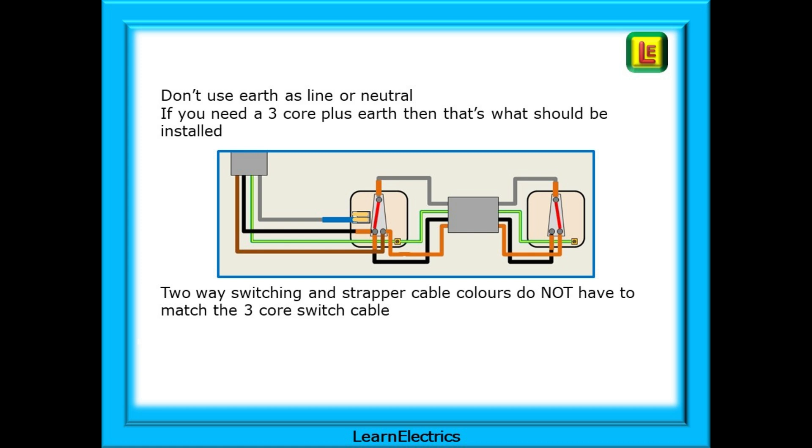Cost-wise, it will make a difference of just a few pounds to the customer for the difference between three core plus earth and the twin and earth cable, plus the cost of a WAGO or terminal block.